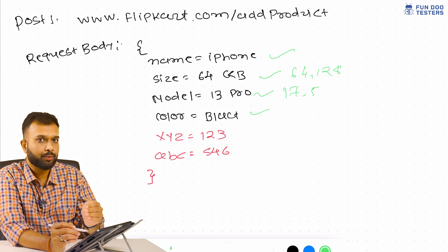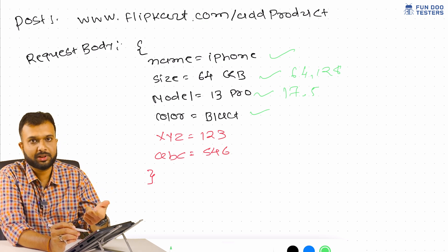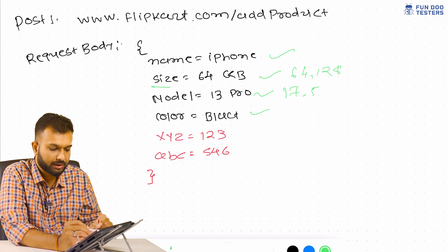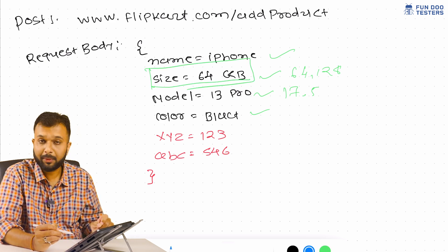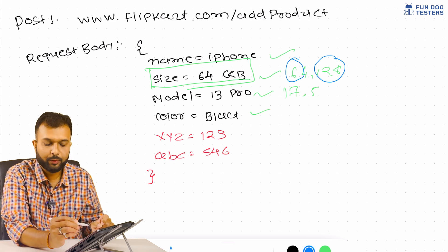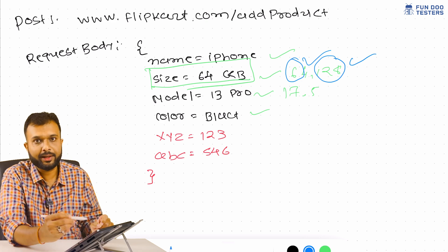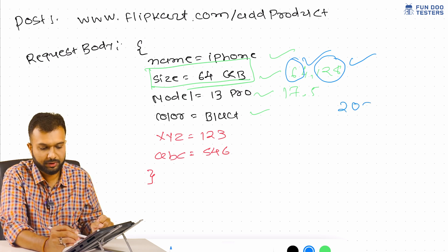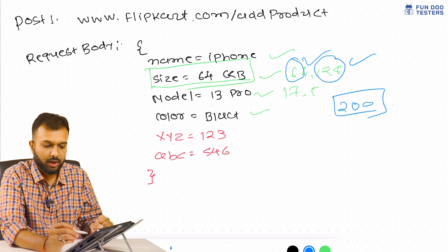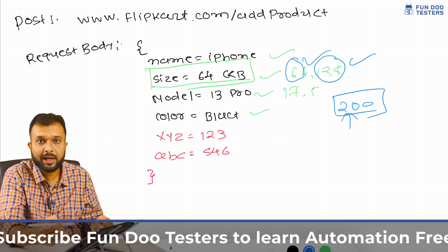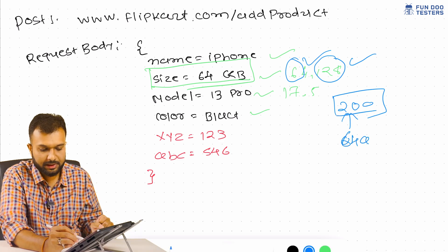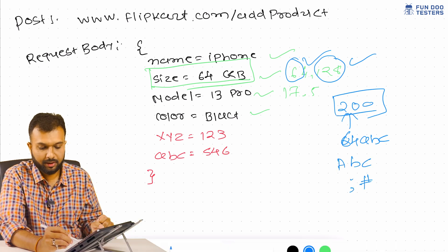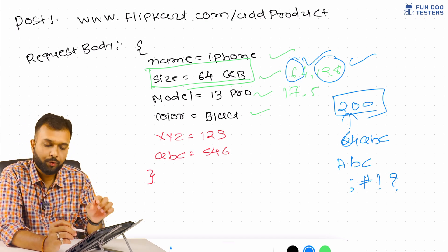The model has to be 13, 14, or 15 — someone should not be able to enter, say, 17.5. We have to test each field by making requests with success data and failure data. For the size field, passing 64 or 128 should be accepted and return a 201 created. Passing an invalid size like 200 GB should fail. Passing alphanumeric data like '64abc' should fail, and passing special characters should also fail.